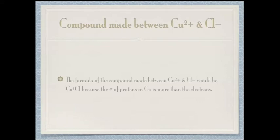The formula of the compound made between Cu2+ and Cl- would be CuCl because the number of protons in Cu is more than the electrons.